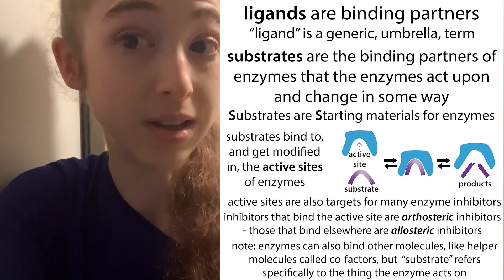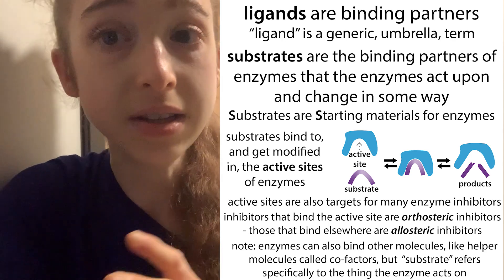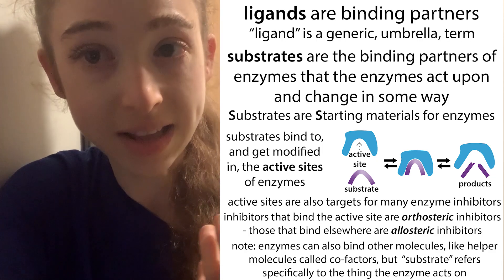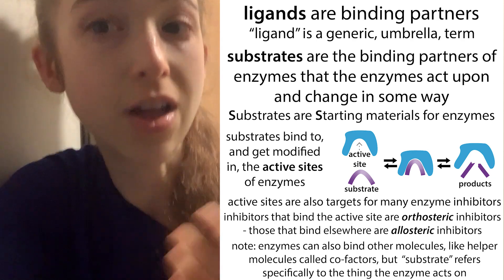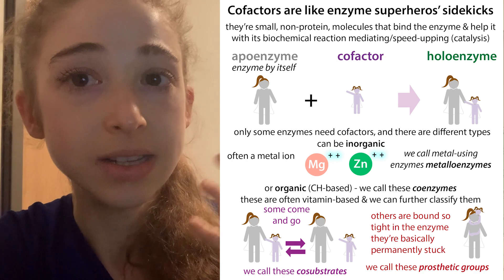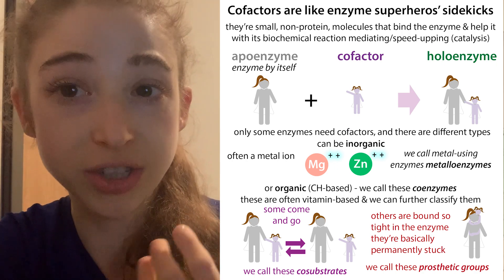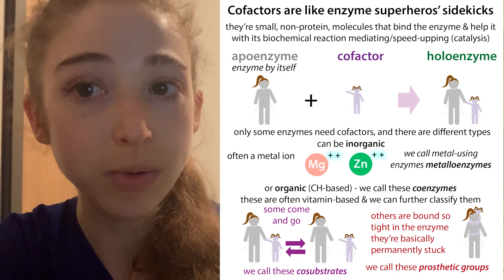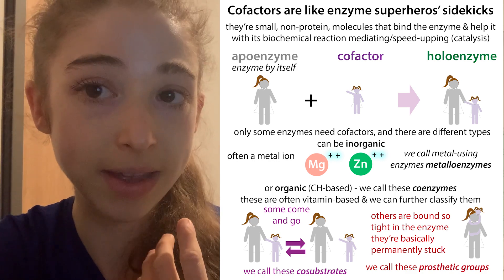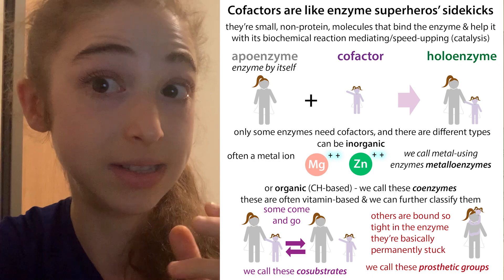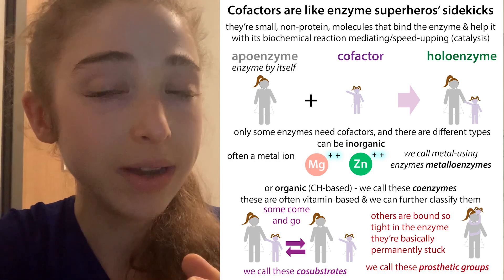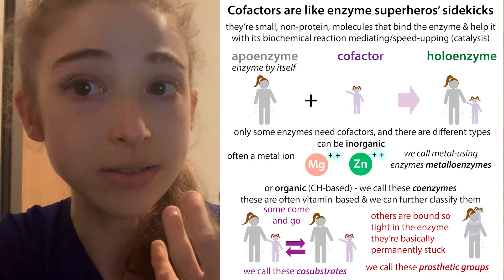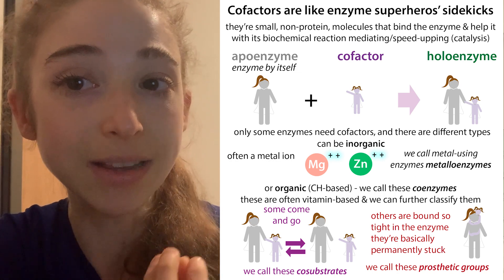With enzymes, we have the substrate — the thing that the enzyme is acting upon — but there are also other things that can bind to an enzyme, such as cofactors, which are little helper molecules. Sometimes enzymes need these helper molecules in order to function. We can talk about the enzyme by itself without the cofactor as the apo enzyme, and with the cofactor as the holo enzyme. We can further classify those cofactors as inorganic things — non-hydrocarbon-based, including metals — and some enzymes need metals, so we call these metalloenzymes.